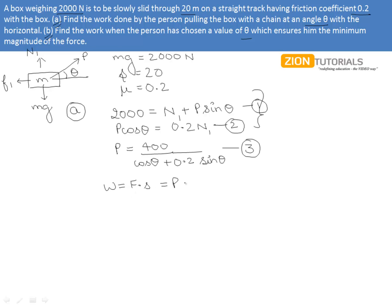So here we will have P S cosθ, that is 8000 cosθ over cosθ plus 0.2 sinθ, giving us 40,000 over 5 plus tanθ.